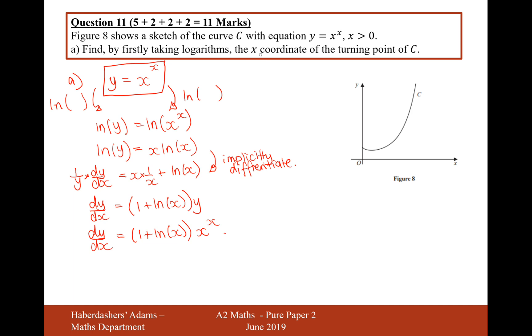Firstly by taking logarithms, find the x-coordinate of the turning point. So we want 1 plus ln x to equal 0. So if we take the 1 onto the other side and get rid of the ln. How do you get rid of a ln? You e both sides. So it's going to be e to the minus 1. There we are. This is the x-coordinate of the turning point. This coordinate here is e to the minus 1.